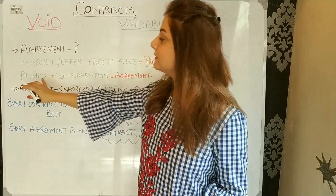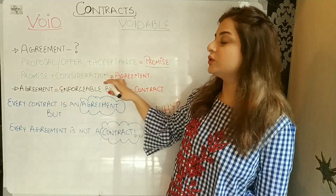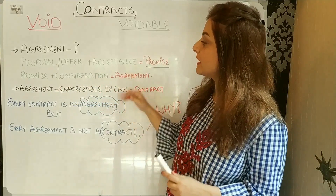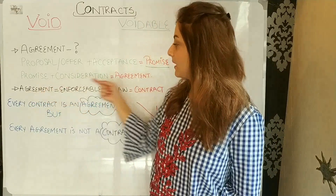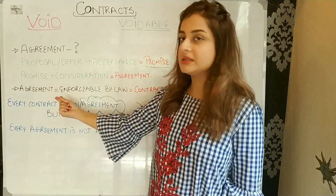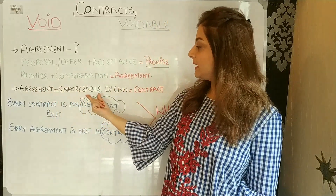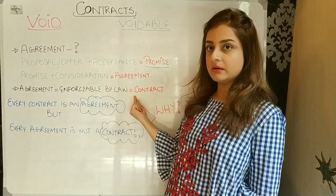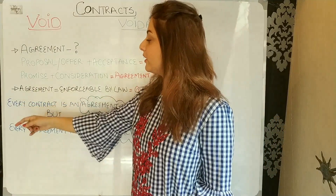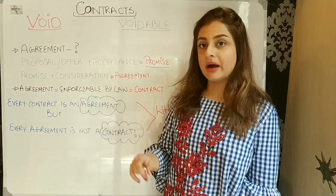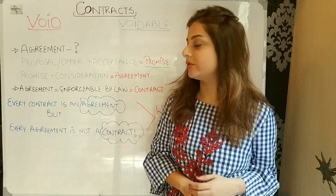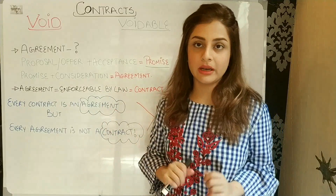And promise plus consideration equals to agreement. After that, your agreement has become here. Agreement equals enforceable by law becomes a contract. So it's very simple. Every contract is an agreement, but every agreement is not a contract. This is a simple formula.